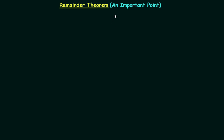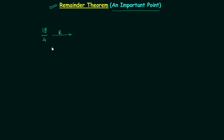In this presentation we will discuss an important point related to the remainder theorem. I will explain this point with the help of one example. In this example, 18 is divided by 4 and we need to find out the remainder of this division. The calculation of remainder for this division is very easy: 4 fours are 16 and 18 minus 16 is 2.